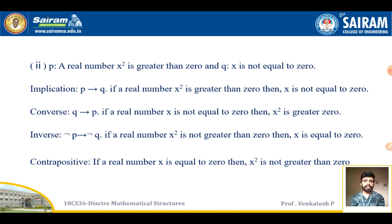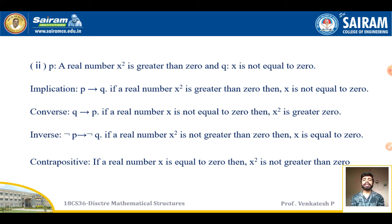For problem 2, let P be 'x² > 0' and Q be 'x ≠ 0'. Implication: If x² > 0, then x ≠ 0 — true. Converse: If x ≠ 0, then x² > 0 — true. Inverse: If x² is not greater than 0, then x = 0 — true. Contrapositive: If x = 0, then x² is not greater than 0 — true.